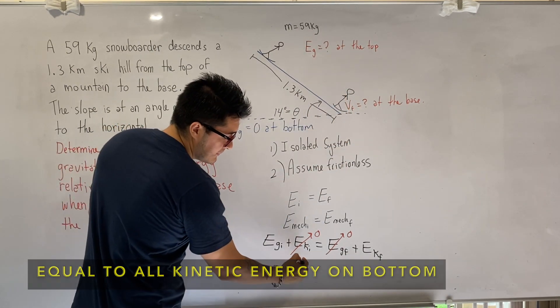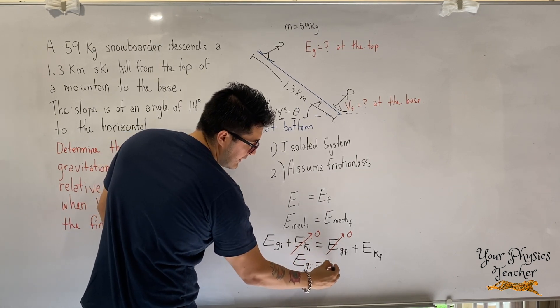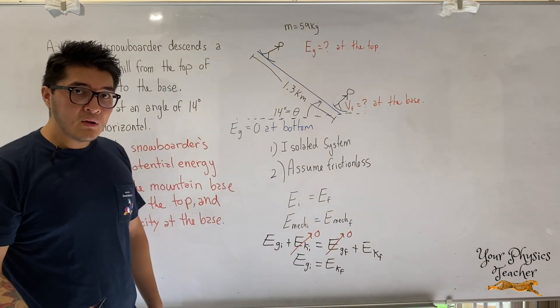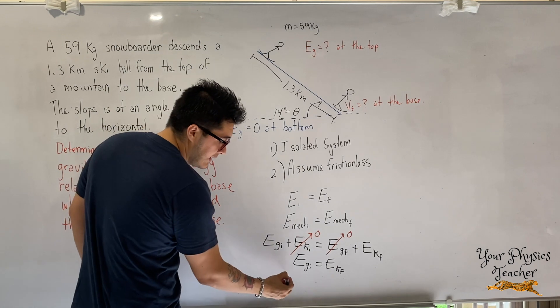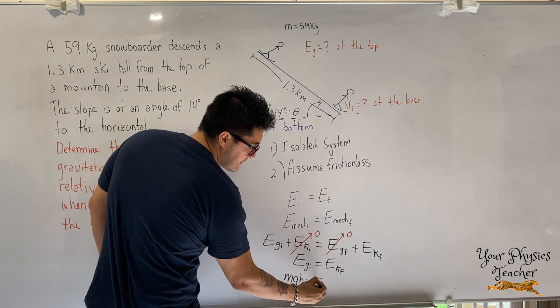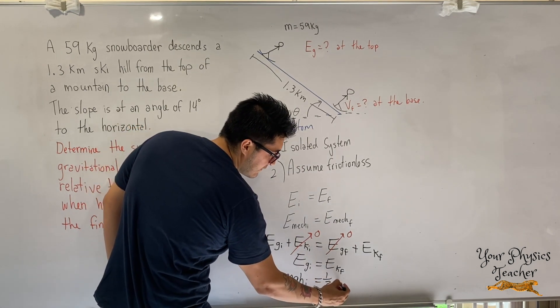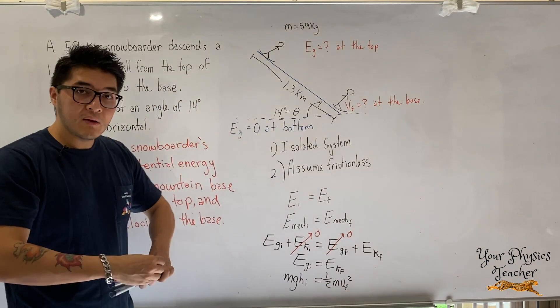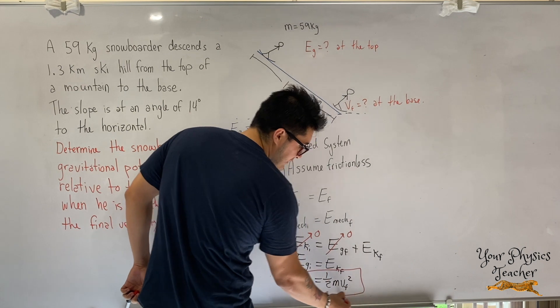Let's rewrite that. E_g initial equals to E_k final. We can calculate the potential energy as mgh initial, and the formula for kinetic energy is one-half mv final squared. That's the main formula that we're going to be working with from conservation of energy considerations.